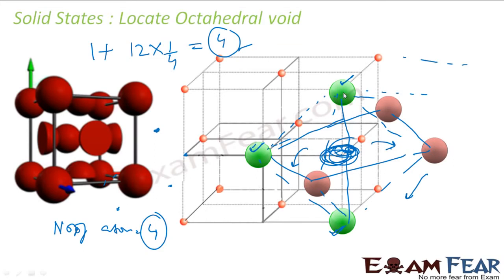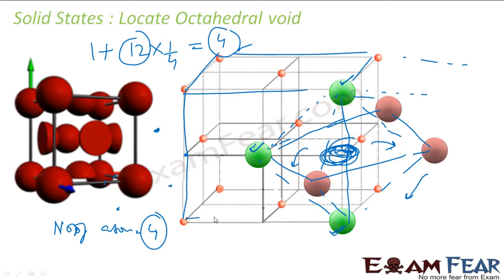Each octahedral void formed on an edge is surrounded by one, two, three — three more other unit cells, so each is shared by three plus one, that is four unit cells. There are 12 such edges giving 12 such octahedral voids, but each of these 12 is shared by four cells, so the total net contribution is 12 divided by 4 equals 3, plus 1 from center equals 4.